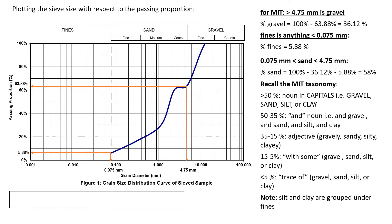Recall the MIT taxonomy. Anything greater than 50% in composition is written in capitals. Anything between 50% to 35% uses 'and' plus the noun — so 'and gravel,' 'and sand,' 'and silt,' 'and clay.' Anything between 35% to 15% attaches an adjective — so 'gravelly,' 'sandy,' 'silty,' or 'clay.' Between 15% to 5% uses 'with some' — 'with some gravel,' 'with some sand,' 'with some silt,' or 'with some clay.' And lastly, anything less than 5% is 'trace of' — 'trace of gravel,' 'trace of sand,' 'trace of silt,' or 'trace of clay.'